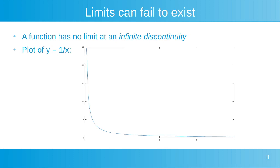Here's an example of an infinite discontinuity. We have a plot of the function y equals 1 over x. We'd like to evaluate the limit as x approaches 0. As the value of x gets closer and closer to 0 from the positive side, the y value just gets bigger and bigger. So as x approaches 0, we're not converging on any one real number — the value of the function is just getting larger and larger. Our function has no limit at x equals 0 due to an infinite discontinuity.